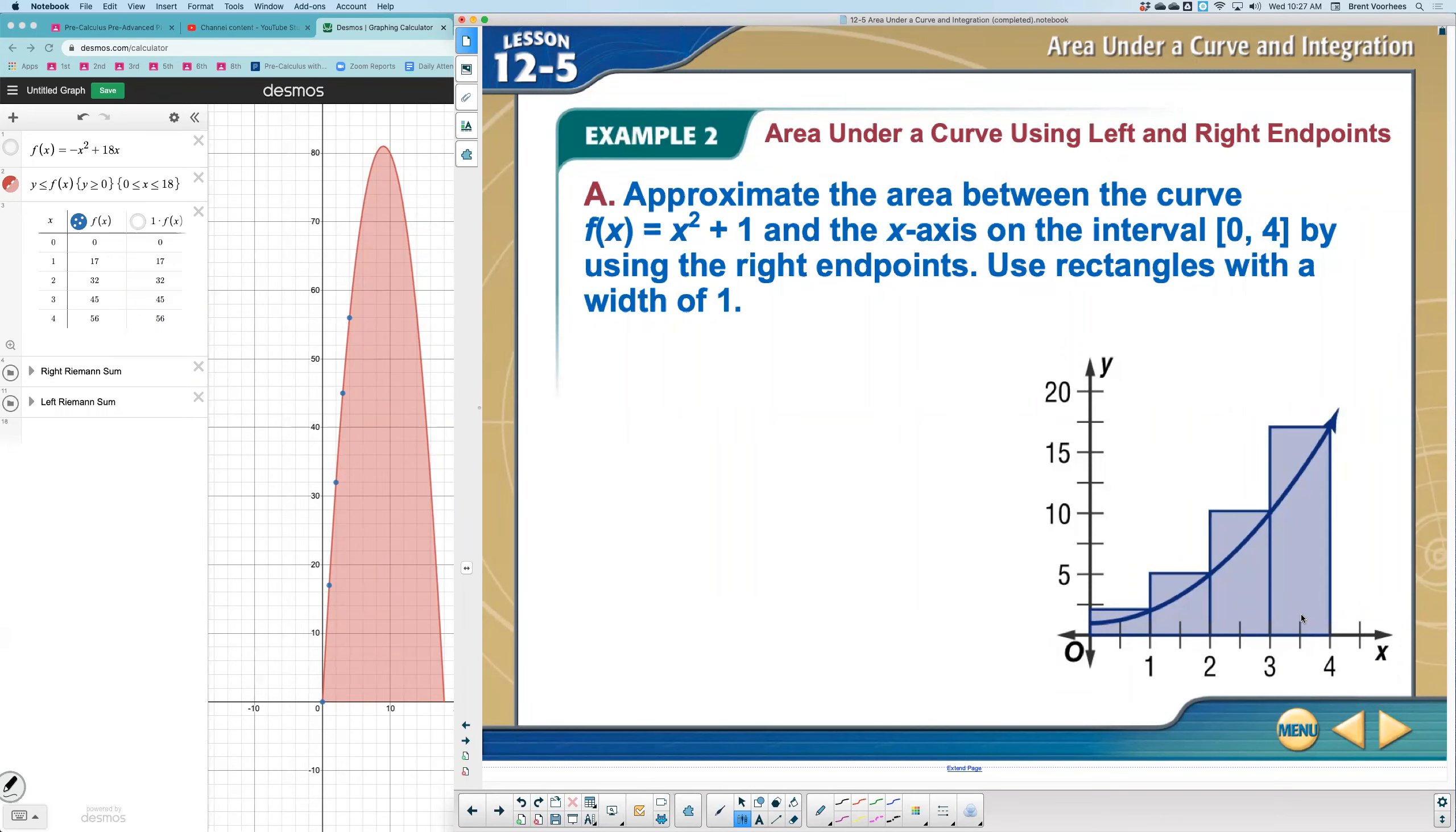Example two, area under curve using both left and right endpoints. So on example one, we only looked at the right endpoints. Making these Riemann sums is what we're going to learn it's called. These blocks going from the right endpoint, and we add those up for the area.